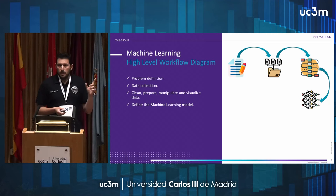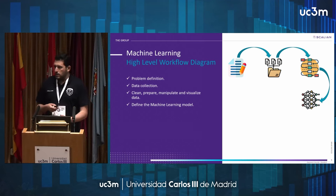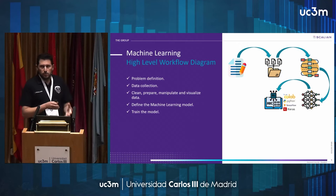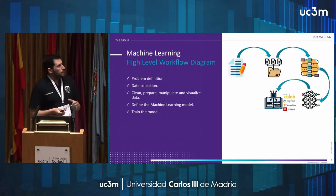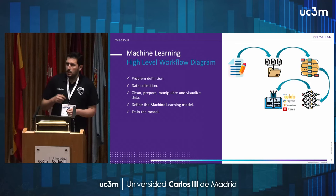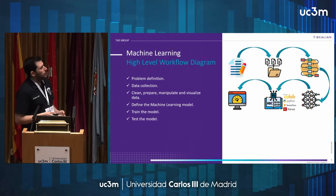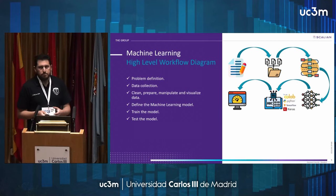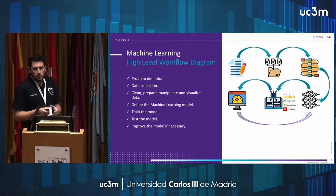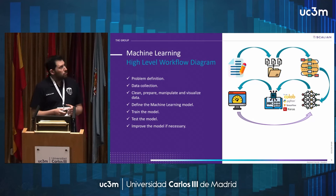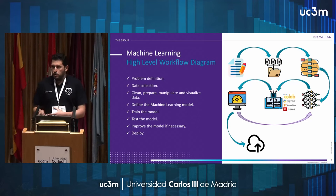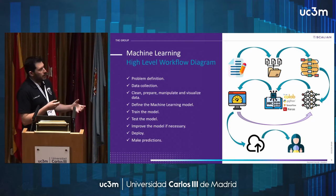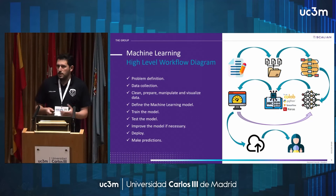At this point we can define the neural network architecture. Once the architecture is defined, we can train the model to learn patterns from data. Before deploying the model to a microcontroller, we must ensure it works properly, and if not, we need to improve it — for example by changing model parameters or the neural network architecture. When the model works properly, we can deploy it to a microcontroller and finally make predictions based on unknown data.